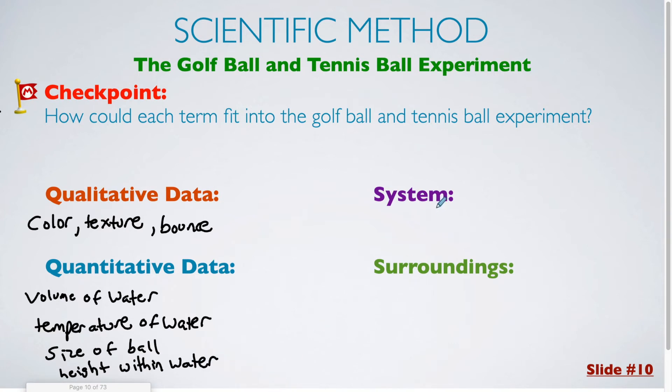All right, how could we use system versus surroundings within our experiment? The system is whatever we were actually studying. So this would be the ball in the water. So I would say the beaker, the water, and the ball. Those would be all the things that were considered part of our system. And the surroundings would be everything outside of that, which may or may not have an effect on the experiment. We could say the air. Maybe the air pressure or the air temperature had some kind of an effect on the outcome. Of course, the person doing the experiment would be part of the surroundings too. Maybe the town or the state that you're in. Maybe altitude has some kind of an effect. So anything that is outside of the system that you are actually studying would be considered the surroundings.